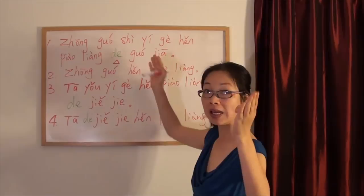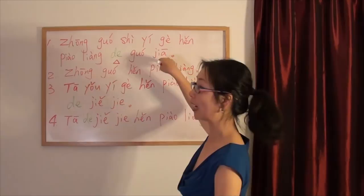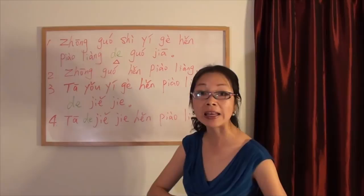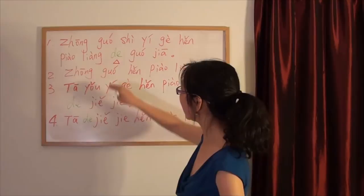So in English, you will say beautiful country. In Chinese, we will say beautiful de country. In this sentence, you cannot miss any word. Every word in this sentence, you have to translate.